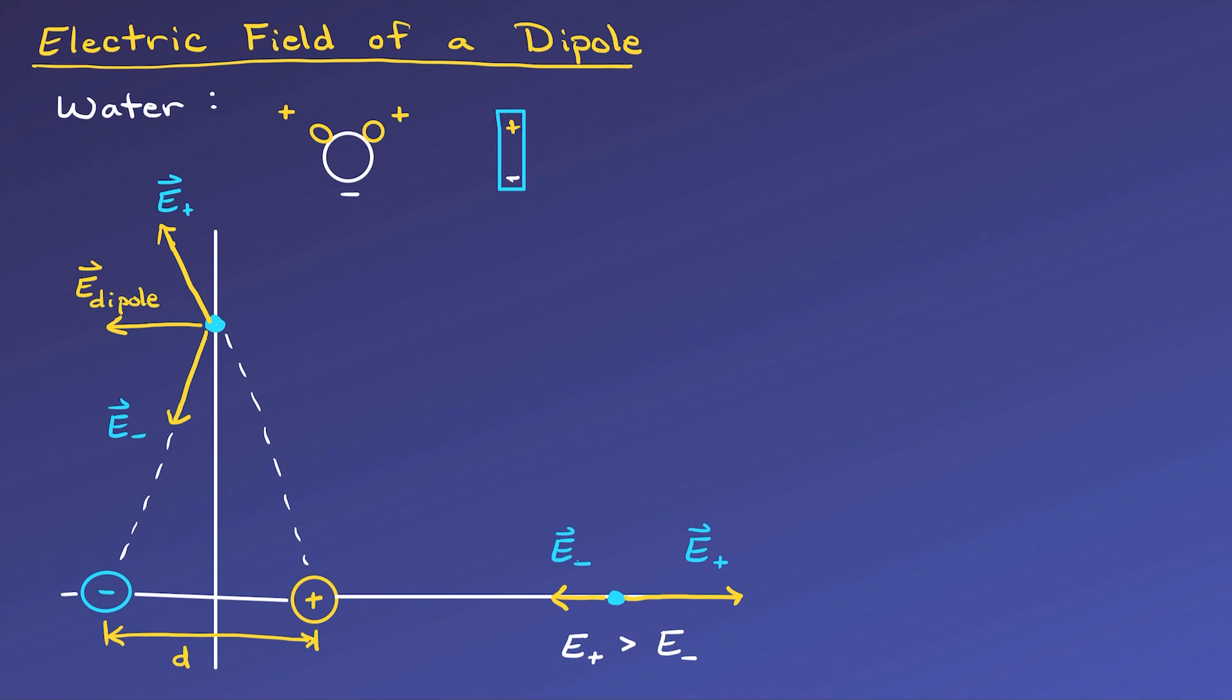For our analysis, I'll label the field from the positive charge with a plus sign subscript and the minus sign subscript for a negative charge's field. Now we'll look at the electric field along both of these axes mathematically, and we'll begin with the x-axis the dipole is sitting on.